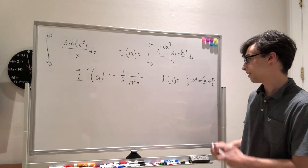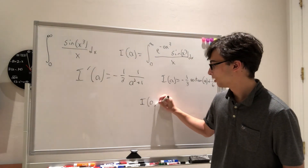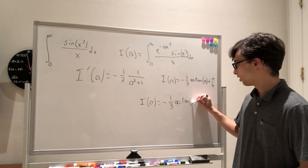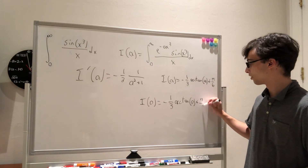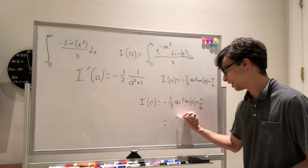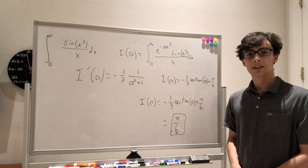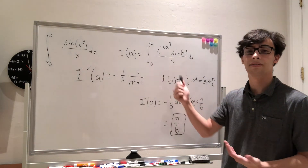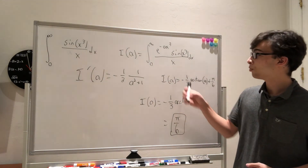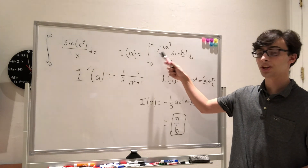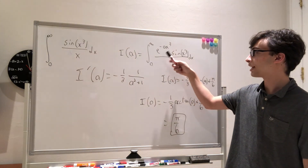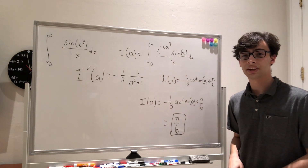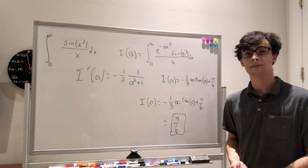Now we can plug C back in. Finally, plugging in I of 0, we get negative one-third arctangent of 0 plus pi over 6. Arctangent of 0 is 0, so this just equals pi over 6, and we're done with the problem. This is called Feynman's technique. The way to use it is to set the original problem equal to I of a and then differentiate — introducing a parameter such that when you take the derivative with respect to it, things cancel and make the integral easier to solve. Thank you for watching! Please like and subscribe if you want to see more, and feel free to leave any comments or suggestions below.